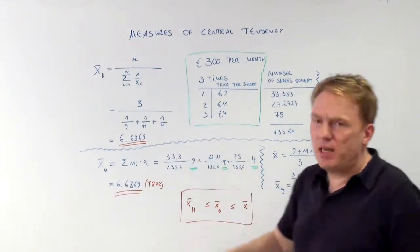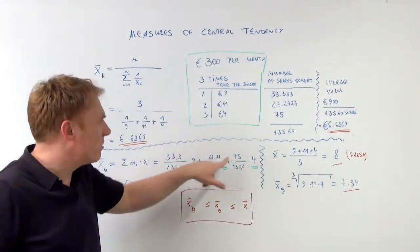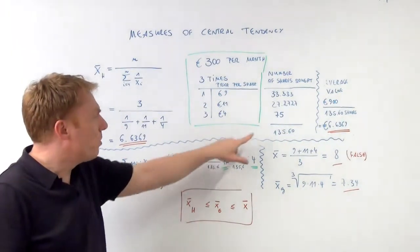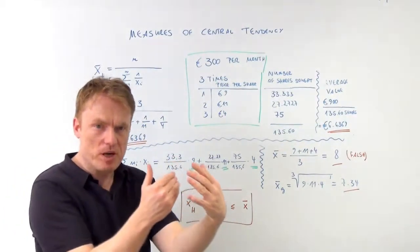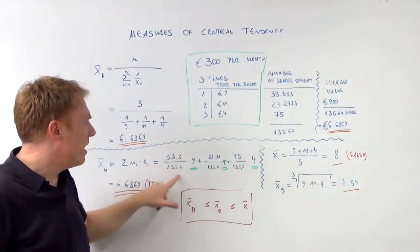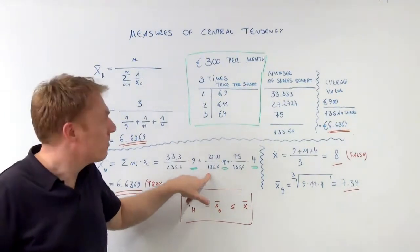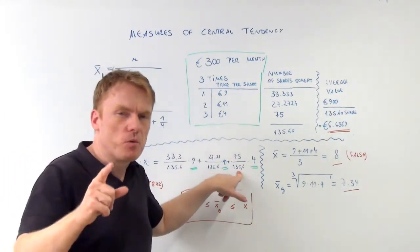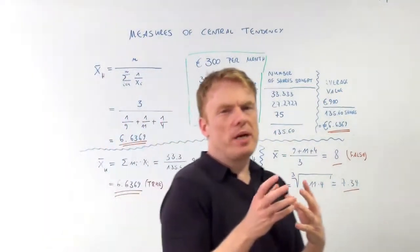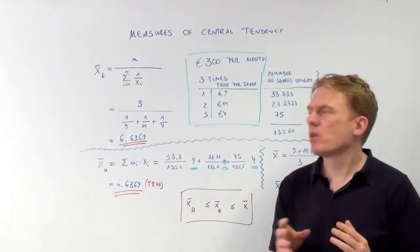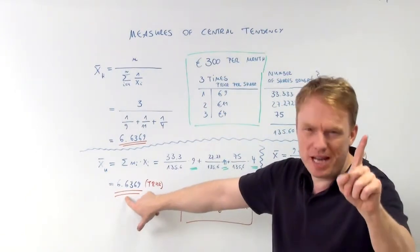Look here, if we buy 33 shares in the first month, 27 shares in the second, 75 shares in the third, we have all in all bought 135.6 shares in all those three months. Which means that is the weight of the first price of 9 euros, this is the weight of the second, and that's the weight of the third price of 4 euros per share. Which means if we did it this way, with weights, the weighted arithmetic mean, we would get the right and correct answer.